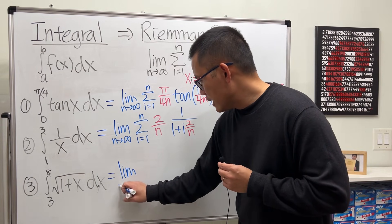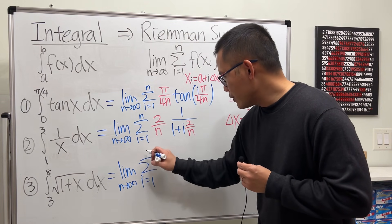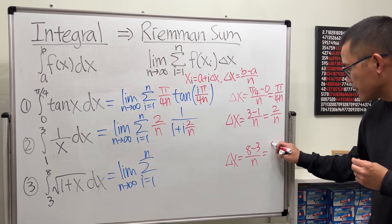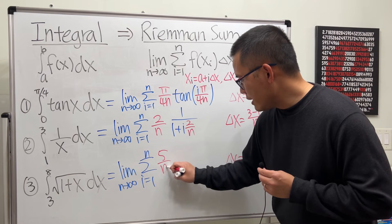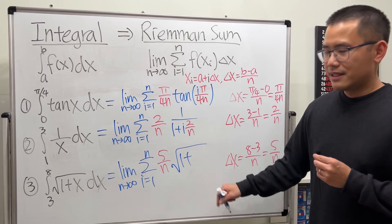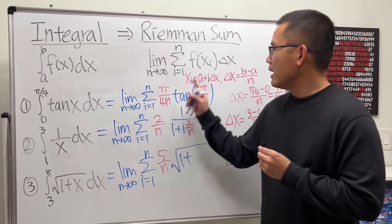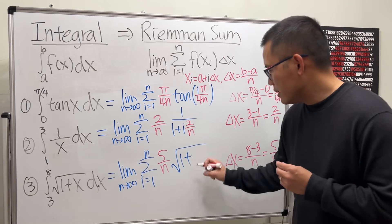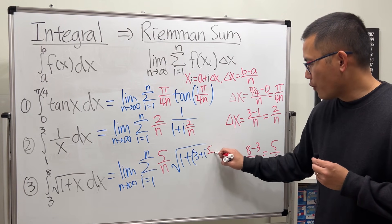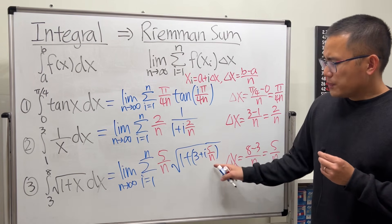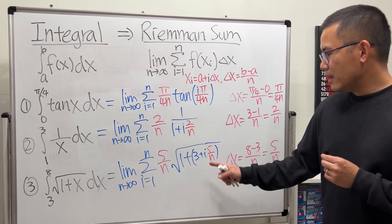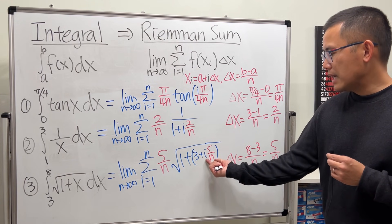For the last one, write the limit as n→∞ and summation i from 1 to n. Compute delta x: (8 minus 3) over n equals 5/n. Put 5/n here. The function is 1 plus the square root, so it's square root of (1 plus x). For x we substitute a plus i·delta x, and since a equals 3, it becomes 3 plus i times (5/n). I prefer to leave it in this form so you can clearly see a plus i·delta x.